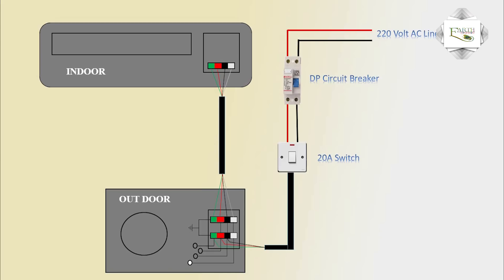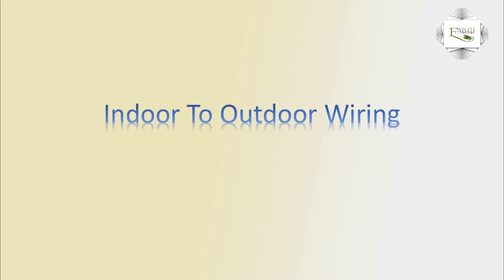Outdoor to Indoor connection Air Condition complete diagram. Second Type — Indoor to Outdoor airing Air Condition.